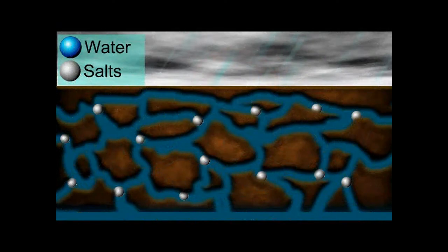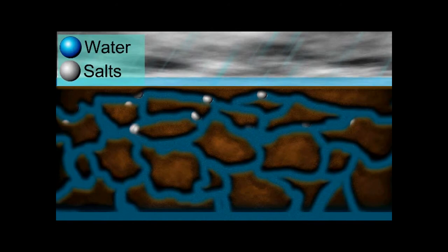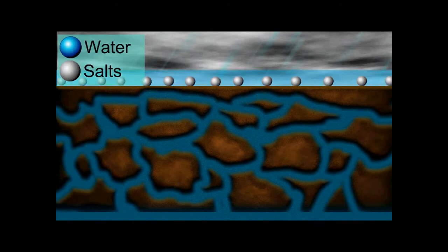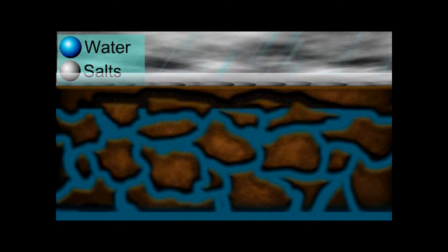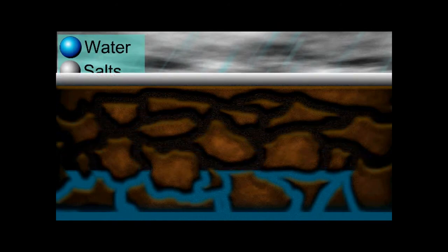Since the parent material of North Dakota soils is rich in salts, including the underlying sodium-rich shale, once groundwater comes to the top, it brings excessive salts with it. Water eventually evaporates, leaving behind the salts.